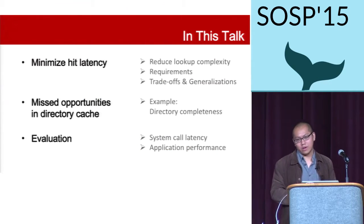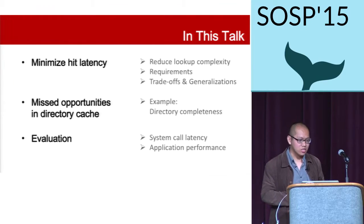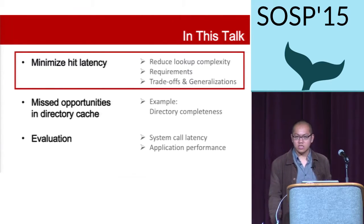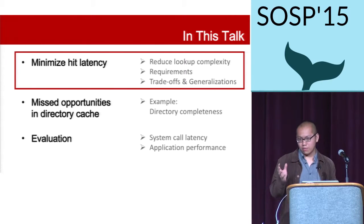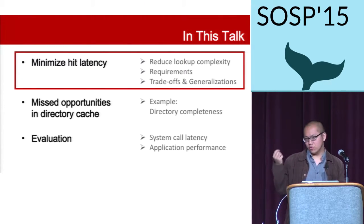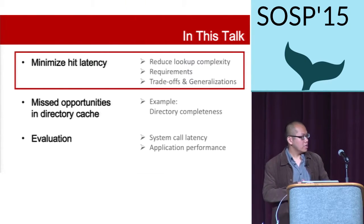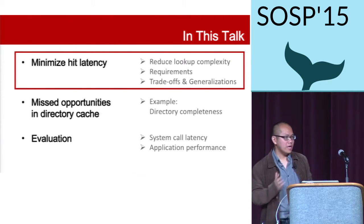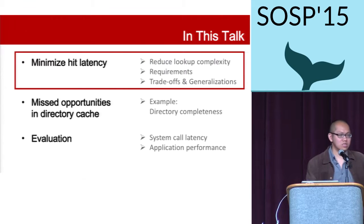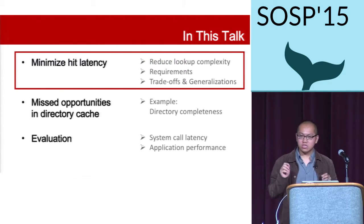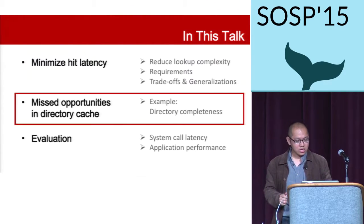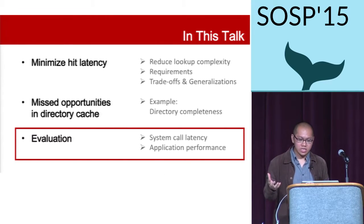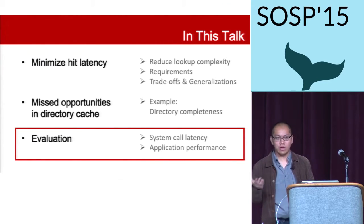Today I'm going to talk about how we have improved the design of the directory cache. We have minimized the hit latency, reduced the complexity of the current lookup functions, and there are a few requirements we need to satisfy to make that happen. I'll also talk about the trade-offs and the generalization of our solutions. Then I'll mention other missed opportunities inside the directory cache — for example, directory completeness. In the evaluation section, I'll cover system call latency and application performance improvements.